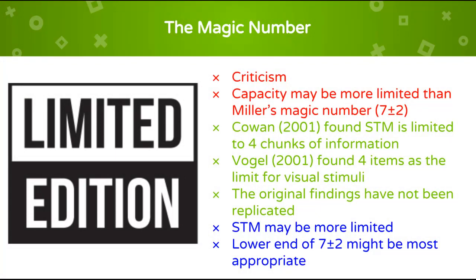Another criticism of the research into short-term memory is that the current accepted value of a seven plus or minus two capacity may not be accurate. Other research suggests that the capacity may actually be even more limited. For example, one study by Cohen, 2001, concluded that short-term memory is likely limited to only four chunks of information.